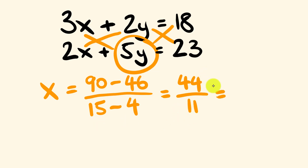So we have 90 minus 46, which is equal to 44, all divided by 15 minus 4, which equals 11. We're left with 44 divided by 11 — x is equal to 4. Nice and simple. This pattern works all the time.